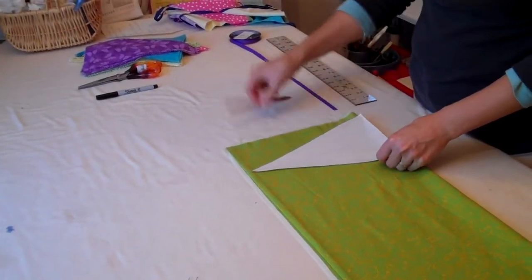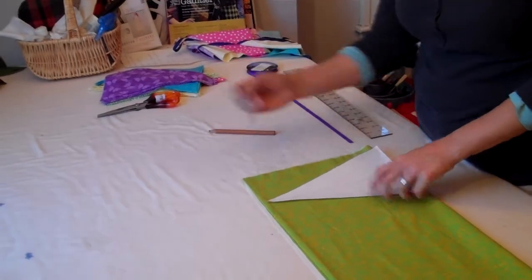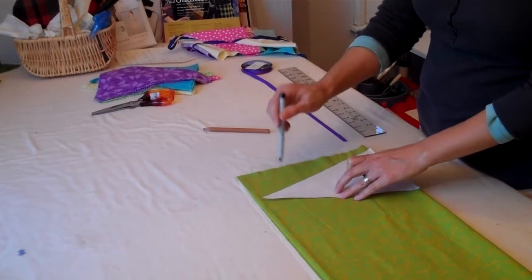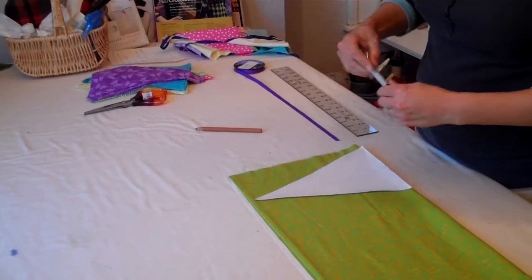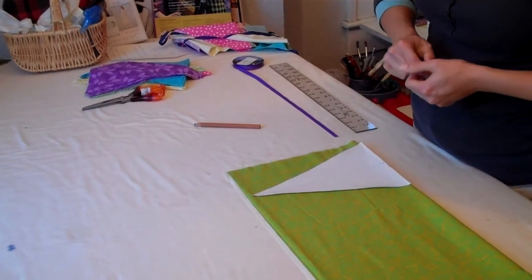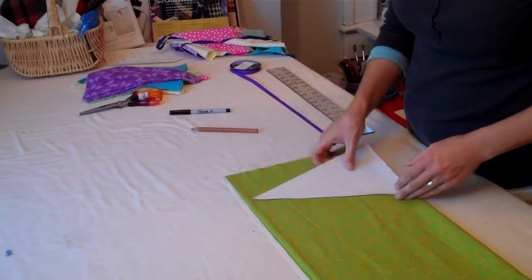We had one fabric that was dark and was hard to see the blue marking pencil so we used a sharpie and we just dot dot dot and when you cut it with the pinking shears you're not going to see that anyway. So you can mark it either way you want to do it.